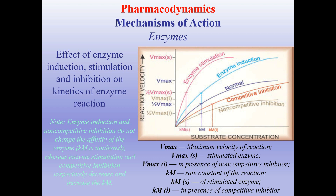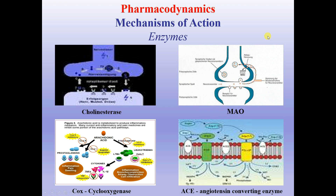Enzymes as targets: on the right side you can see the effect of enzyme induction/stimulation and inhibition on kinetics of enzyme reaction — normal situation, competitive inhibition, non-competitive inhibition showing decreased activity, and enzyme induction/stimulation showing increased activity. Some examples of enzymes targeted by drugs: cholinesterase, monoamine oxidase, cyclooxygenase, and angiotensin-converting enzyme.